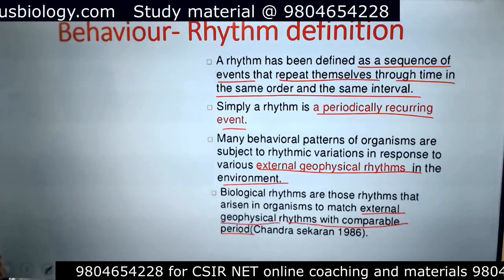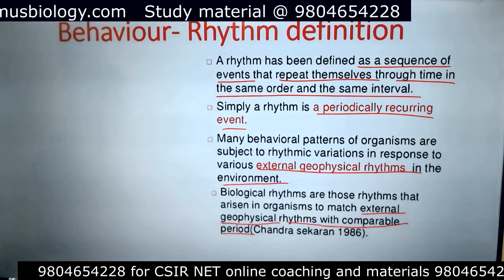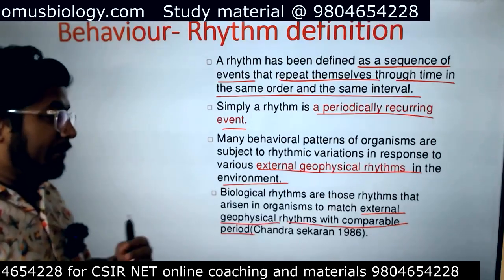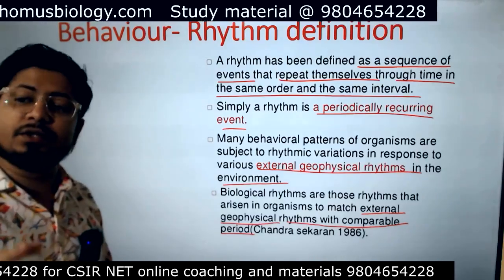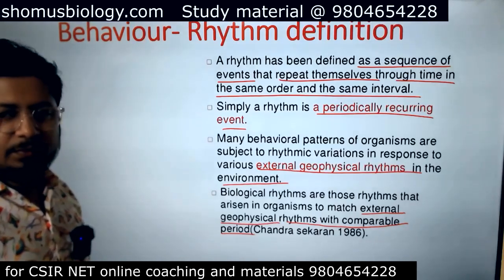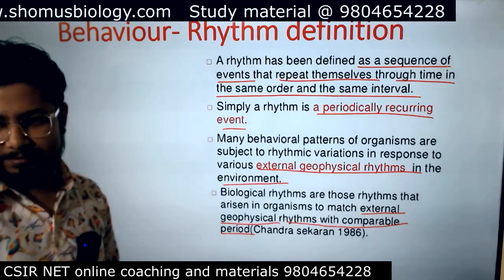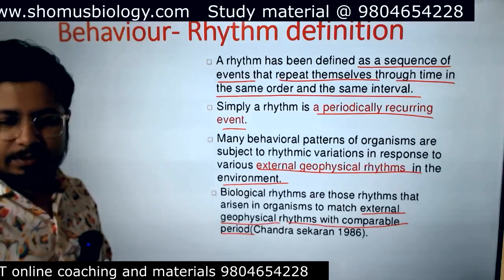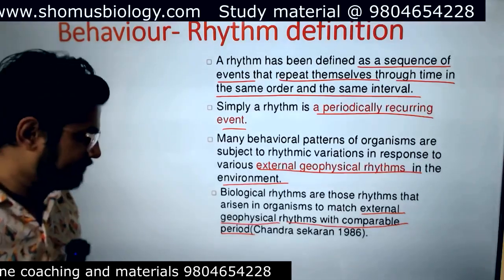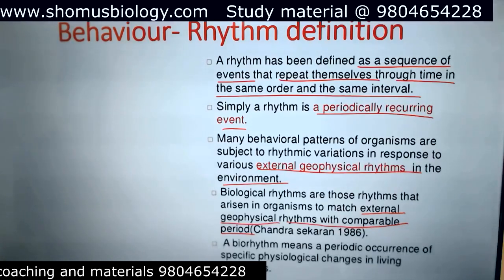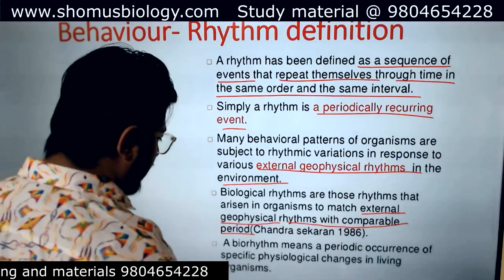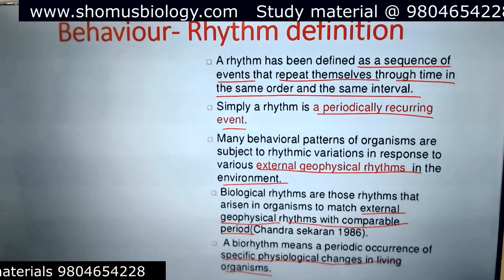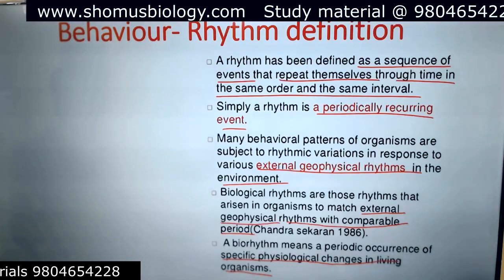Biological rhythms are those rhythms that arise in organisms to match external geophysical rhythms with a comparable period. There are examples of biorhythms that originated inside organisms — inside living organisms — to match the external geophysical conditions. Based on the lunar cycle, if some process in an organism's body is regulated, that is one sort of biorhythm. Biorhythms means a periodic occurrence of specific physiological changes in living organisms.